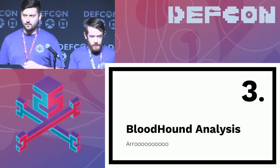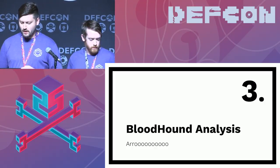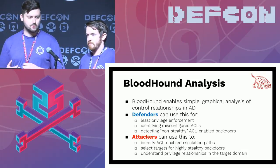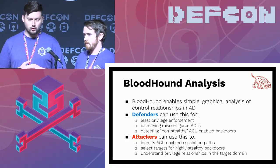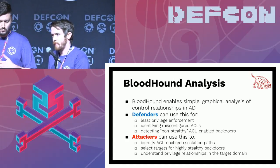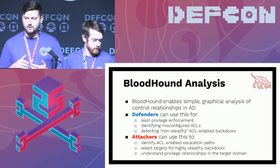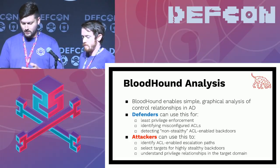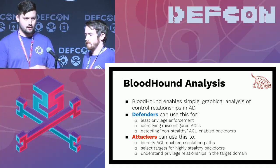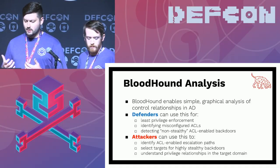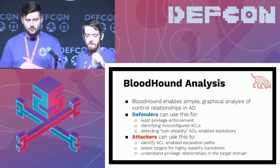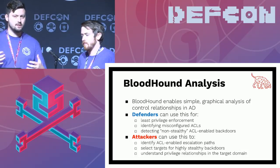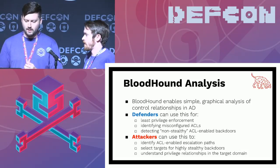We added several ACE edges into the BloodHound database so you can easily map out existing control relationships — that's the 1.3 update from about a month or two ago. For defenders, we hope you can use this for enforcing least privilege policies, identifying misconfigured ACLs, and detecting non-stealthy DACL-based backdoors. As an attacker, we can use this to find ACL-based escalation paths, look for interesting principals to backdoor based on their existing privilege, and understand the existing ACL situation.